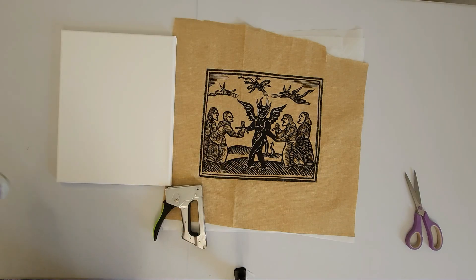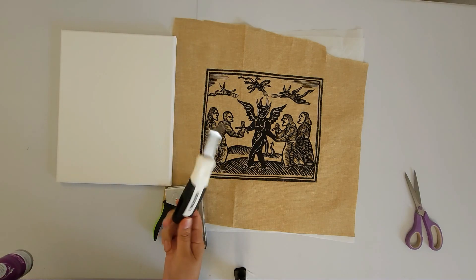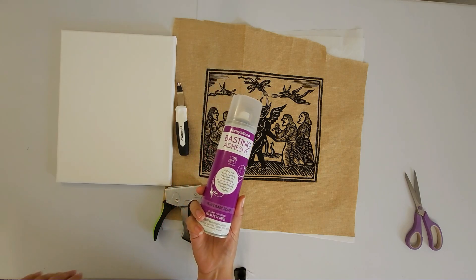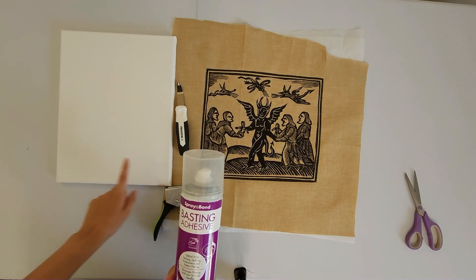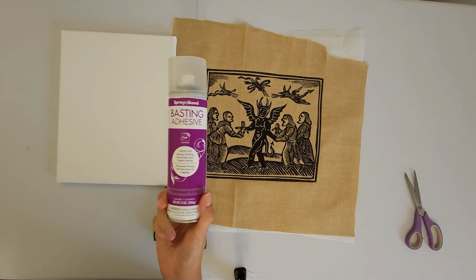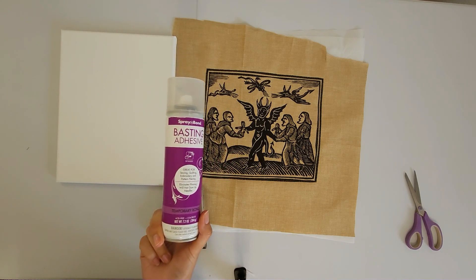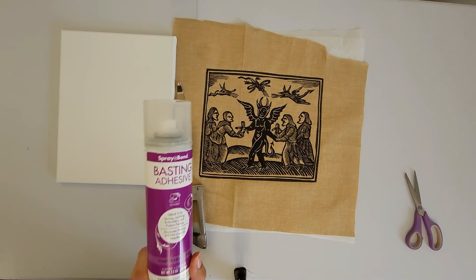Optional tools that will make it easier is a staple remover and then basting spray. So before we staple the embroidery onto the canvas, this is useful for positioning so it doesn't move around and it's easier to get everything lined up.